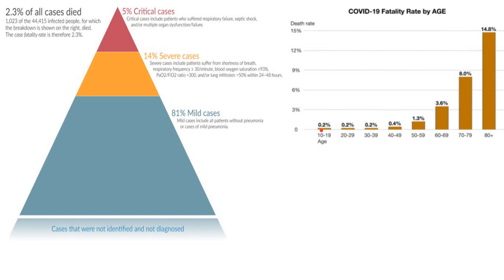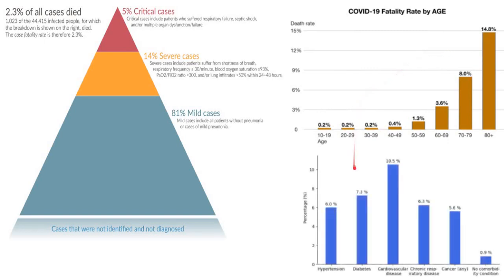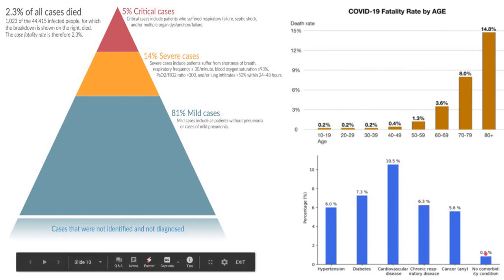Here is the COVID-19 fatality rate by age. For children under 10, deaths are very rarely reported. In middle age it is 0.2%, above 50 it is 1.3%, climbing up to 15% in those aged 80 and above. For people with pre-existing morbidities like hypertension, diabetes, cardiovascular disease, COPD, and cancer, the case fatality rate is nearly 5 to 6%.